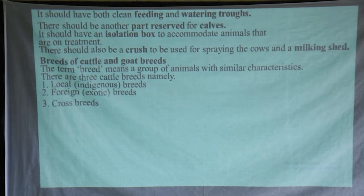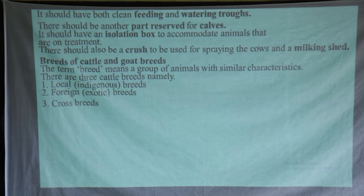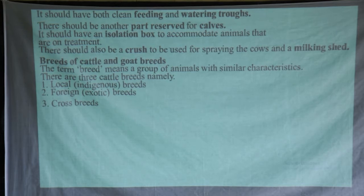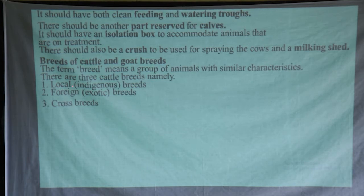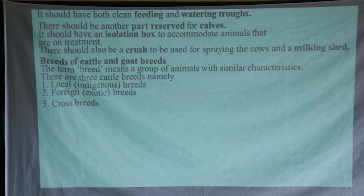Now let's look at the breeds of cattle and goats. A breed simply means a group of animals with similar characteristics — the same features and similar identifications. We have majorly three main breeds: local breeds, which are also called indigenous breeds; foreign breeds or exotic breeds; and from these two we get the cross breeds.